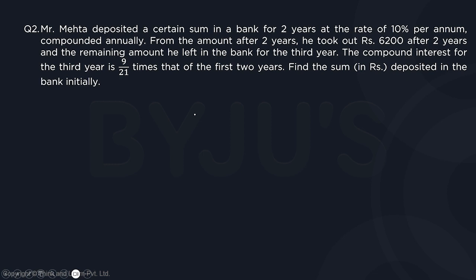From the amount after two years, he took out Rs. 6200 and left the remaining amount in the bank for the third year. The compound interest for the third year is 9/21 times that of the first two years. Find the sum deposited in the bank initially.